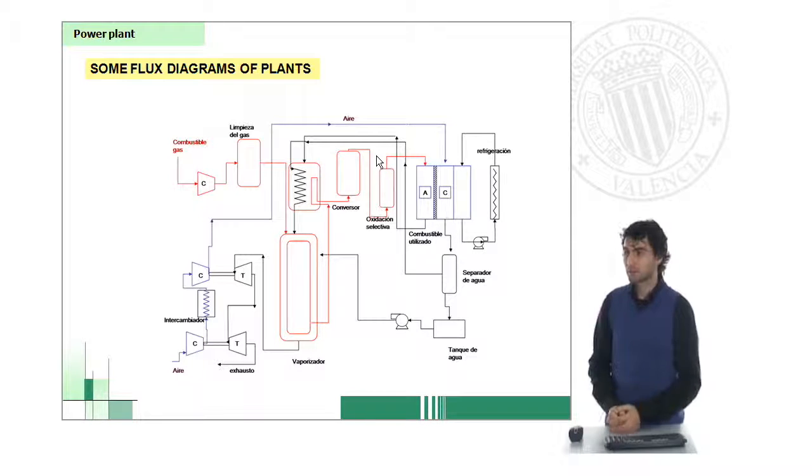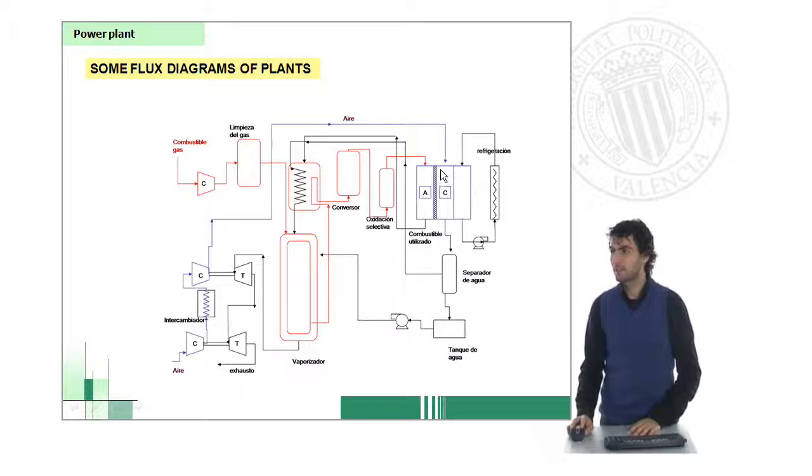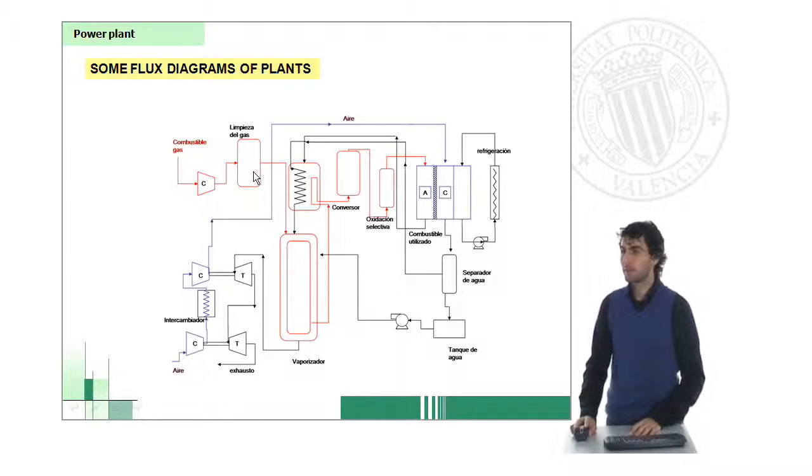Just to finish with this presentation, I would like to show some of the flux or flow diagrams of the plants which are already used to obtain electricity using fuel cells. In all diagrams you will see that the modules of fuel cells are here. And then we have different units which will be performing the treatment operations like cleaning of the gas, the conversion, the reforming tank, and also pressurizing and heating by using compressors.